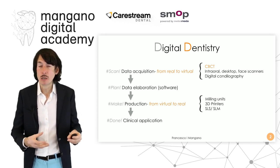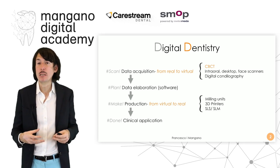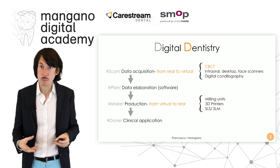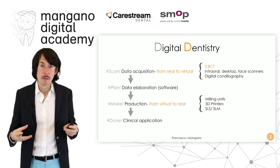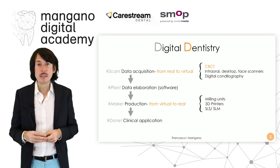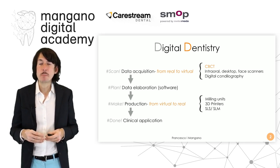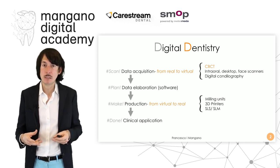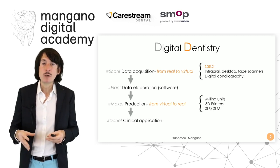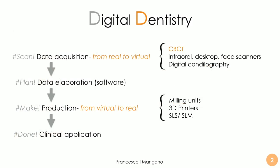We design restorations — crowns and bridges — we design surgical templates, we design bytes for orthodontic treatments or other things. Then we can produce and manufacture these devices going from virtual to real using milling units, printers, and techniques like selective laser sintering and selective laser melting. We can then apply these devices and surgical templates clinically, for example for surgery.